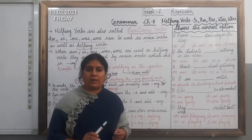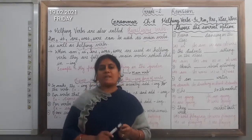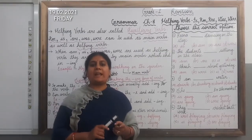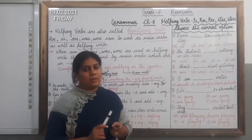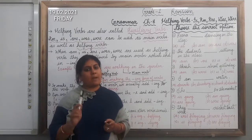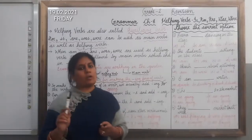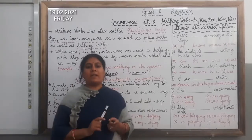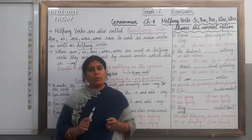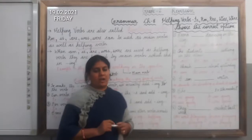Now we will talk about was and were. Was and were are used in the past time. Was is always used with the singular noun and with pronouns like I, he, she, it. And were is also used in the past time when we talk about the plural noun and pronouns like you, we, they.